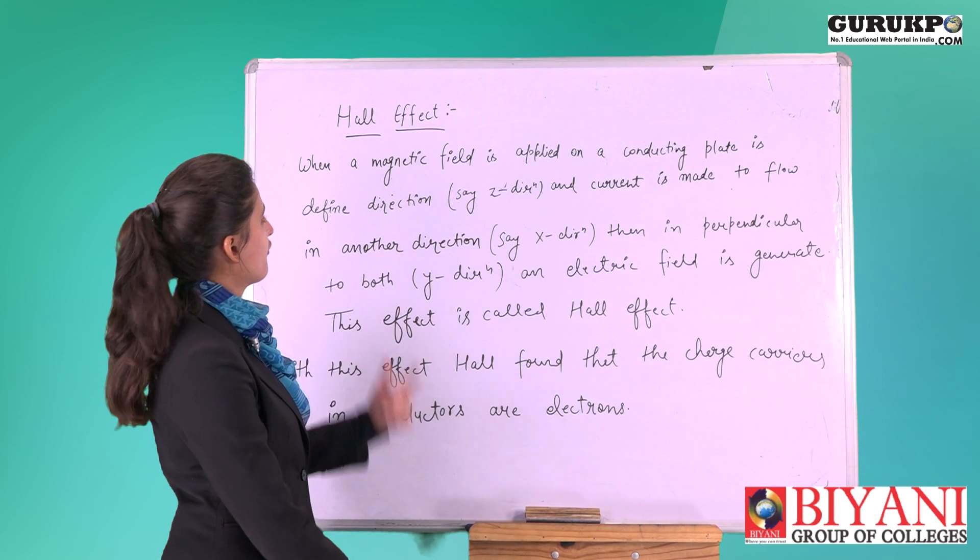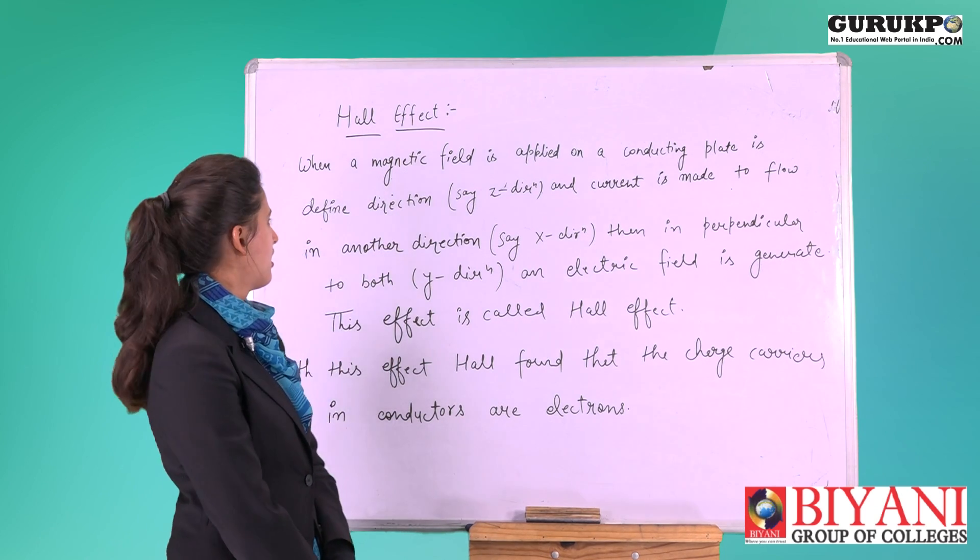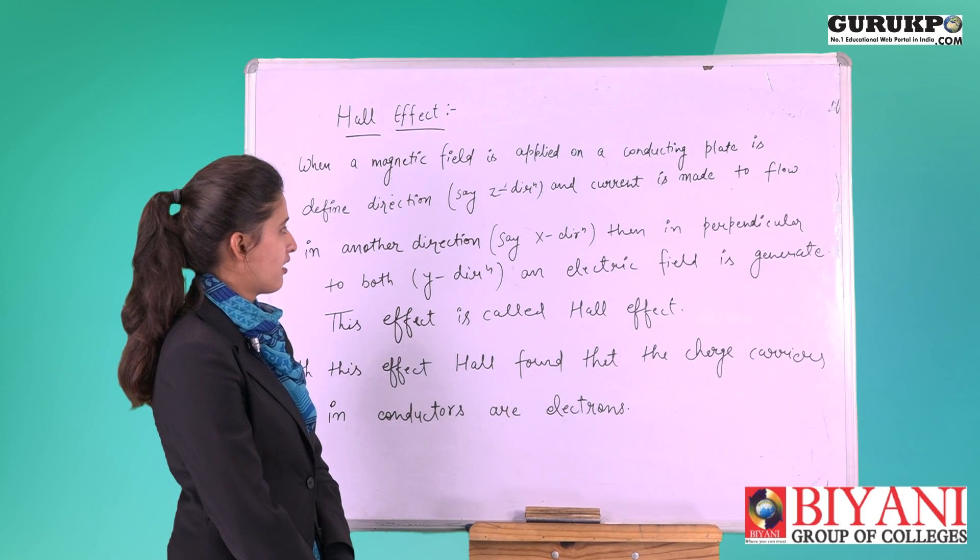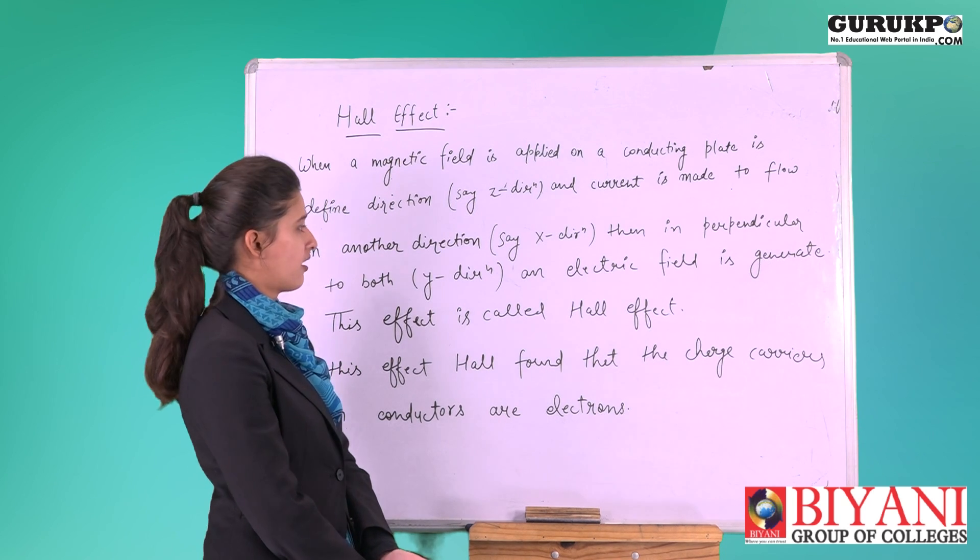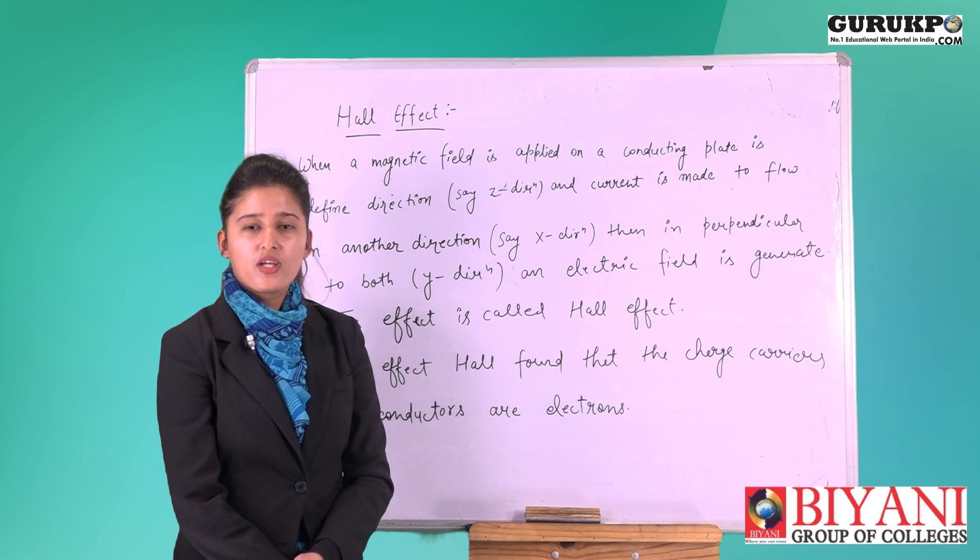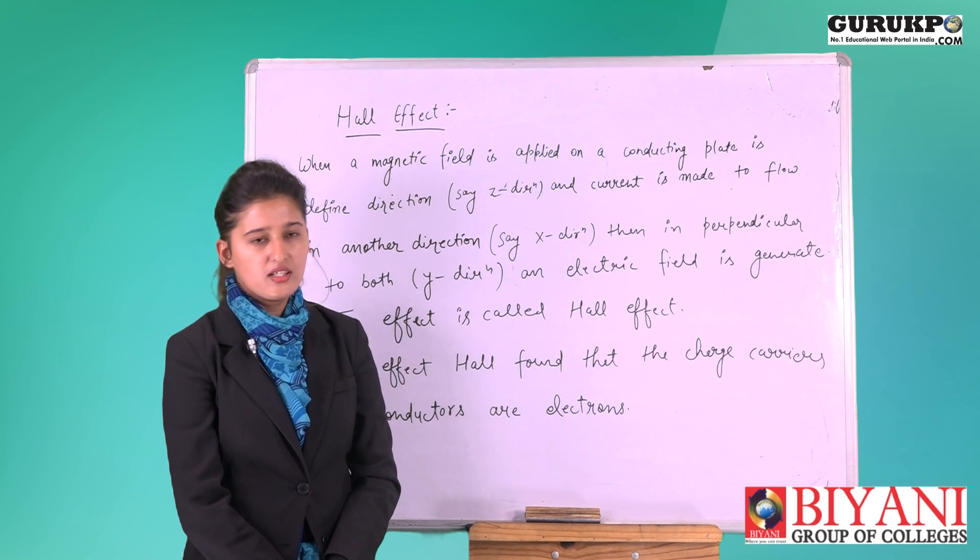What is Hall Effect? When a magnetic field is applied on a conducting plate in a defined direction, say z direction, and current is made to flow in another direction, say x direction, we take magnetic field in z direction and current in x direction.